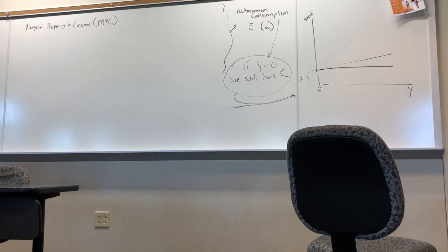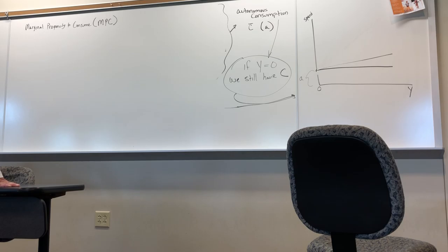A slope of zero would give us a flat function; a slope of one would effectively give us a vertical function. We don't expect either endpoint — we expect it to be somewhere in between. We'll put up a calculation in just a second. In terms of real life, we find that MPC has a lot of variance depending on many different factors.